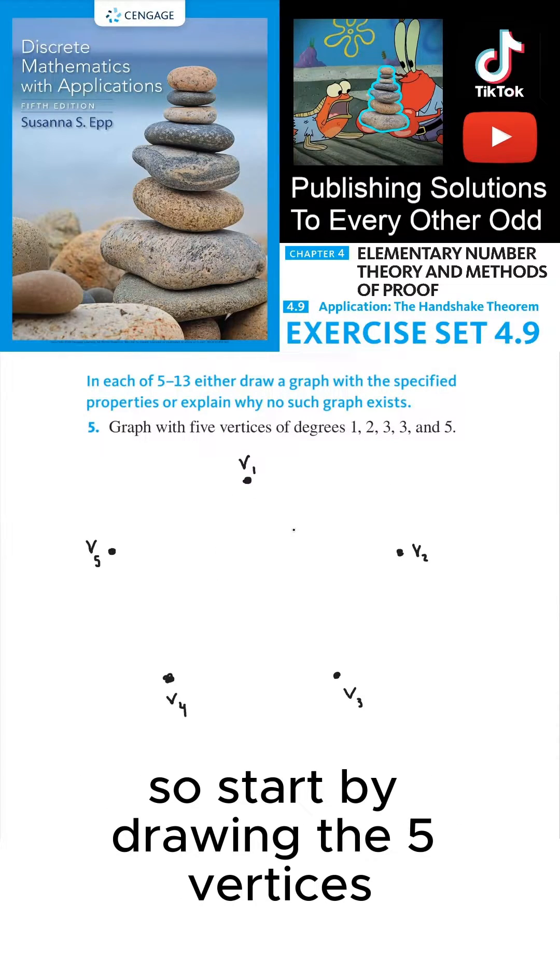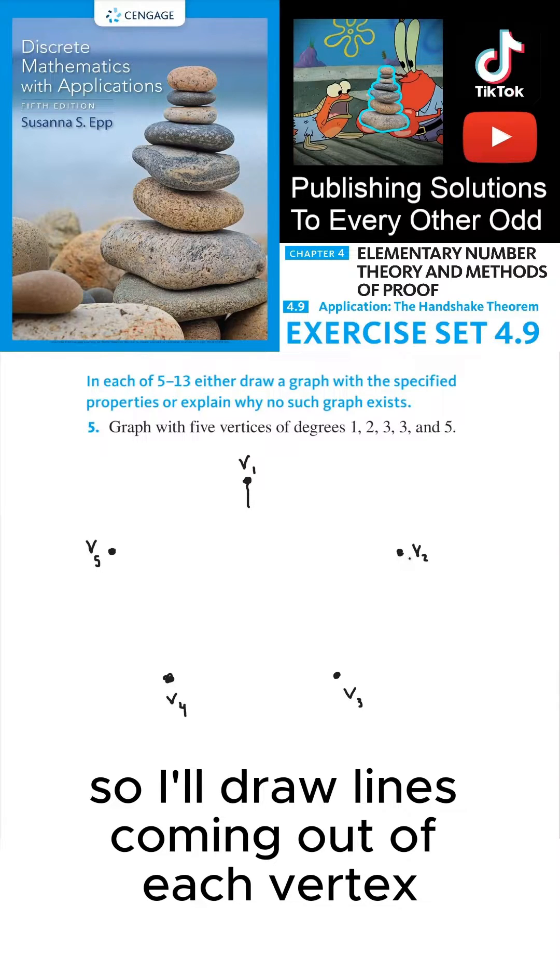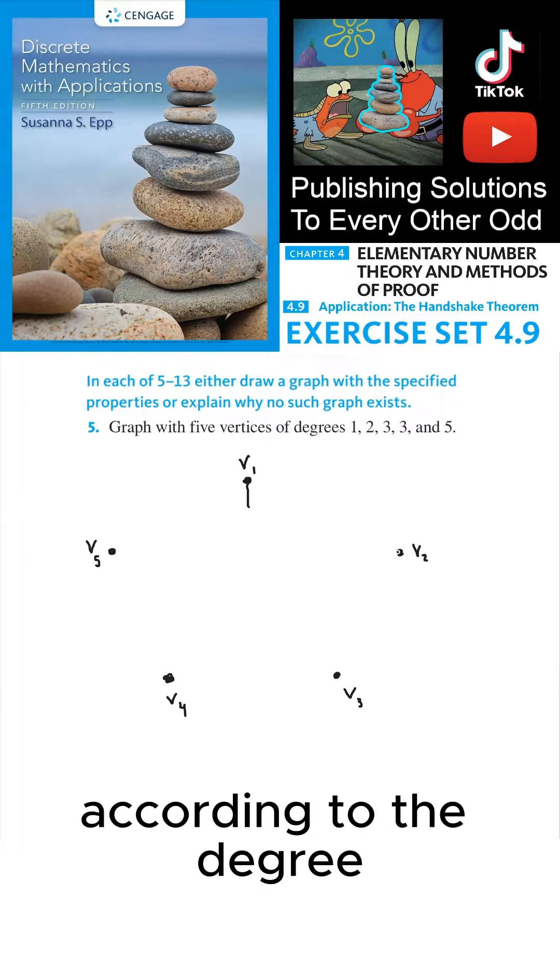So I'll start by drawing the 5 vertices, and each vertex will have these degrees respectively. So I'll draw lines coming out of each vertex according to the degree.